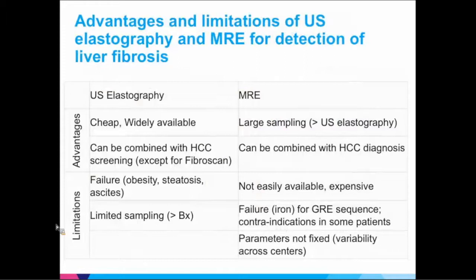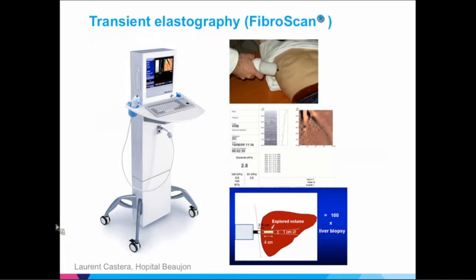The FibroScan system — we have two here in hepatology. You put it in the intercostal space, push not too hard, and send the excitation. You have to do ten values, get a median value. One quality control is that the IQR — interquartile range — has to be below about 30%, meaning you can't have too much dispersion. The mean value is reported along with the IQR, in this case 0.8 kilopascals, and the number of measures should be at least ten.